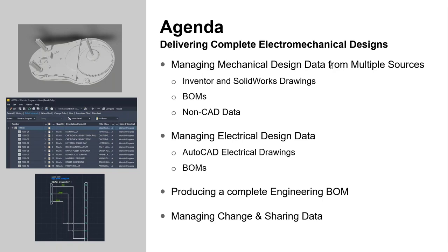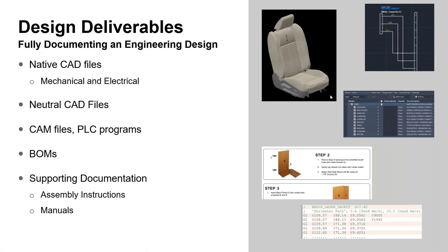Then we'll move on to some examples of managing mechanical design data, especially managing from different sources - when you've got multiple CAD packages in use in your environment. We'll include managing BOMs and non-CAD data, viewables, neutral formats for manufacturing, etc. Then we'll review electrical design data, specifically using AutoCAD Electrical and the management of that data using Autodesk Vault, and see how you could put the whole thing together and deliver what appears to be a complete unified design.